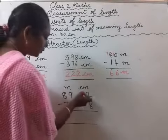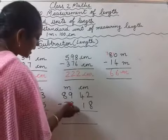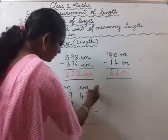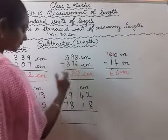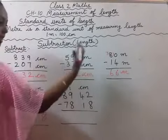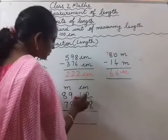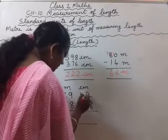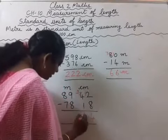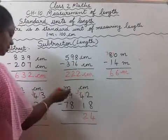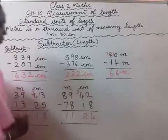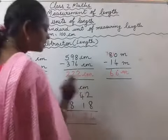Next, we are going to subtract 89 meter 42 centimeter minus 78 meter 18 centimeter. First we will start with centimeter — always start from the smaller unit. So you have to borrow from the next place. This will become 12 and this will become 3. So 12 minus 8 will be 4, and 3 minus 1 is 2. Next, moving to meters: 9 minus 8 is 1, and 8 minus 7 is 1. So what is the answer? 11 meter 24 centimeter.